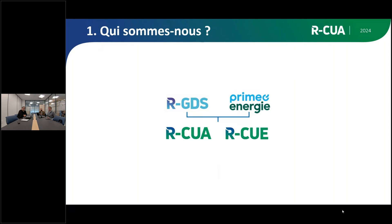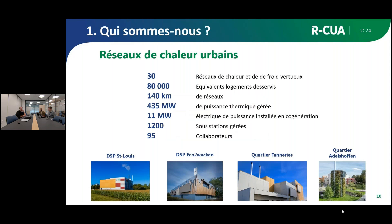Qui sommes-nous ? Au niveau réseau RCU, nous avons deux filiales : RCU Alsace, qui œuvre essentiellement dans le Bas-Rhin et sur Mulhouse Alsace Agglomération, et RCU Est, répartie dans l'Est voire au niveau national. Ces filiales sont détenues par deux maisons-mères : le réseau GDS, une société d'économie mixte détenue en majorité par la ville de Strasbourg, et Primeo Energy, une coopérative suisse. À date, on a une trentaine de réseaux de chaleur en Alsace, tous décarbonés, avec un minimum de 70-80 % d'énergie renouvelable, et l'objectif pour tous est le 100 % d'énergie décarbonée. On alimente environ 80 000 logements pour 140 km de réseau.